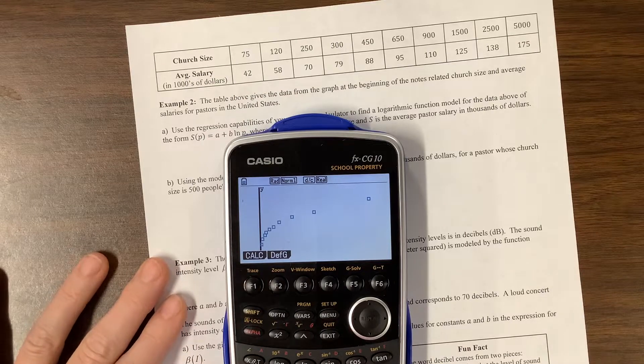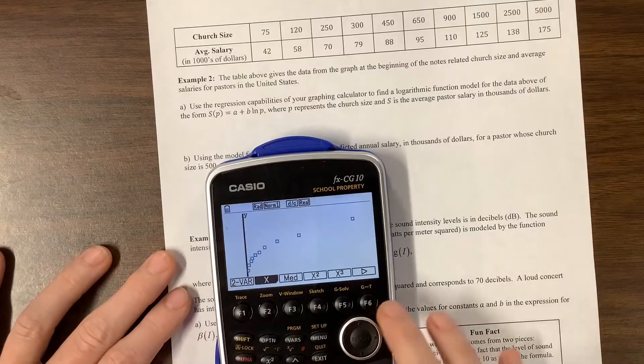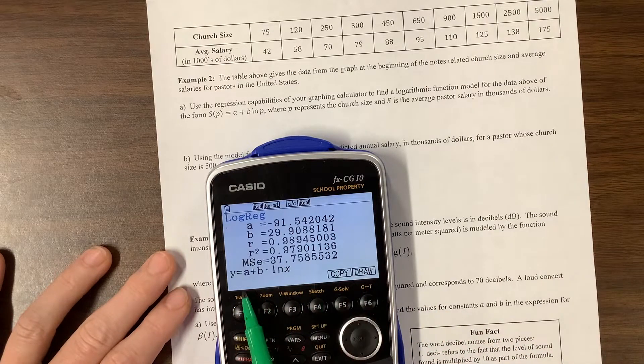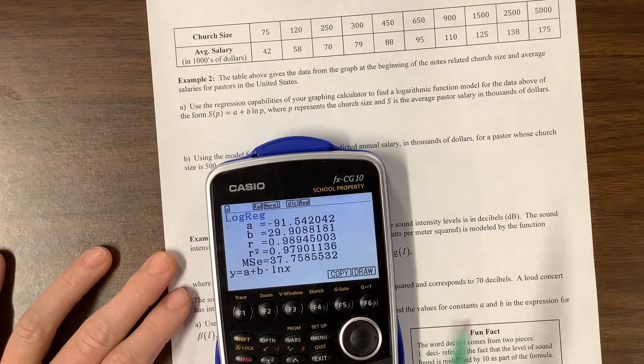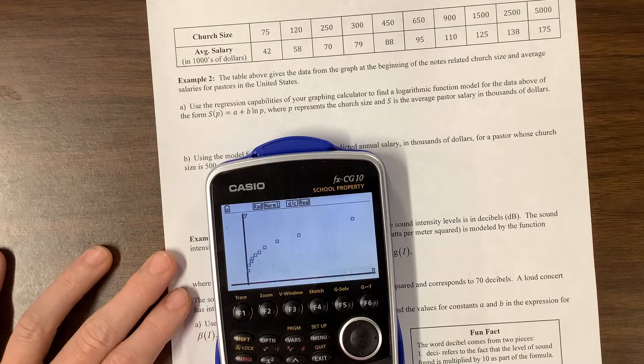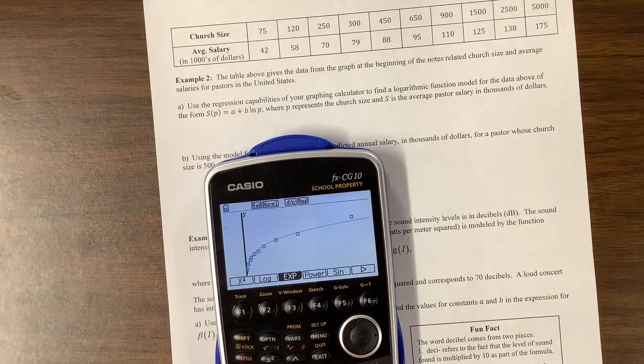And that does look pretty logarithmic. So what did they tell us to do? Write an equation. So calculate. We can come over to the log equation. Notice log, it automatically spits it out in the a plus b times the natural log of x form. I'm going to copy this, take this into y equals. And there, I drew it for me.